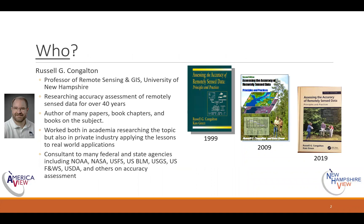We're going to talk about who, what, when, and why related to assessing the accuracy of maps. I am Russ Congleton, a professor of remote sensing and GIS at the University of New Hampshire, and I've been researching accuracy assessment of maps for over 40 years.